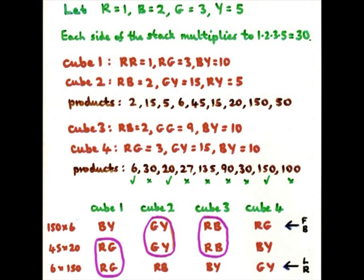And then 45 and 20. 45 comes from three 15s, red, green, and green, yellow. And 20 comes from two 10s, red, blue, and blue, yellow. And then the third possibility is similar.